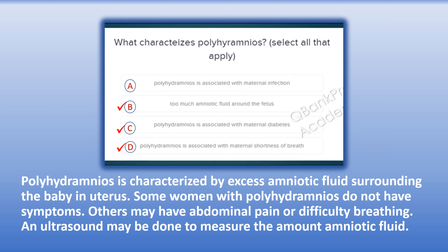The correct answers are B. Too much amniotic fluid around the fetus, C. Polyhydramnios is associated with maternal diabetes, and D. Polyhydramnios is associated with maternal shortness of breath. Explanation: Polyhydramnios is characterized by excess amniotic fluid surrounding the baby in the uterus. Some women do not have symptoms; others may have abdominal pain or difficulty breathing. An ultrasound may be done to measure the amount of amniotic fluid.